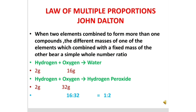The ratio of the different masses of oxygen combining with fixed hydrogen is 16:32, which simplifies to 1:2 — a simple whole number ratio. This confirms the Law of Multiple Proportions: when two elements form more than one compound, the mass ratio of one element (with fixed mass of the other) is a simple whole number ratio.